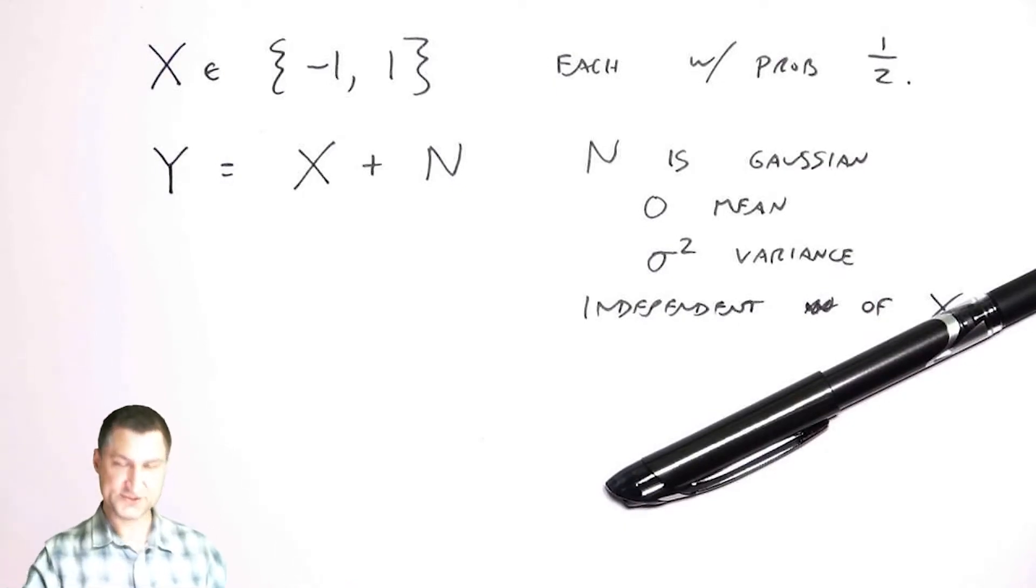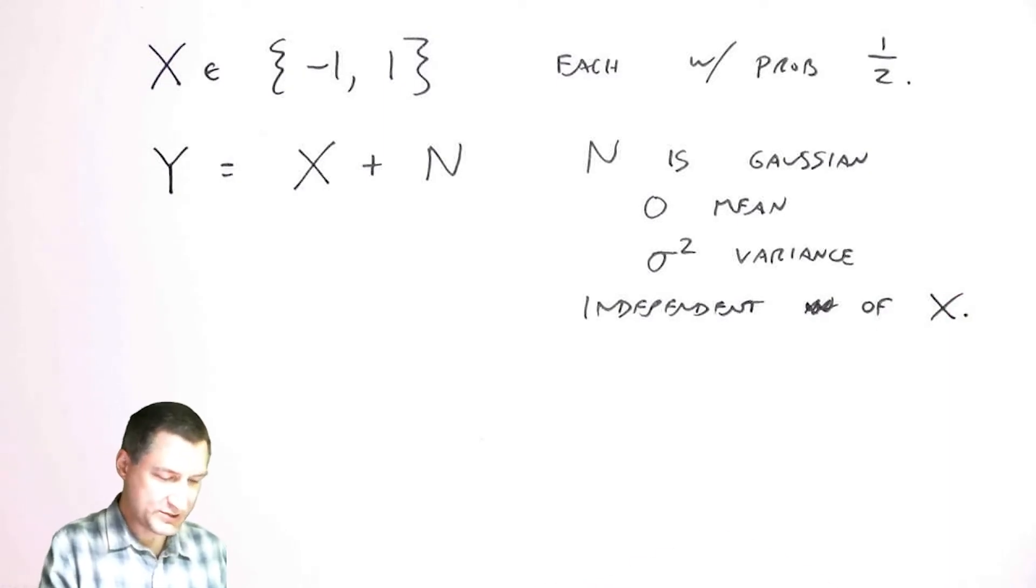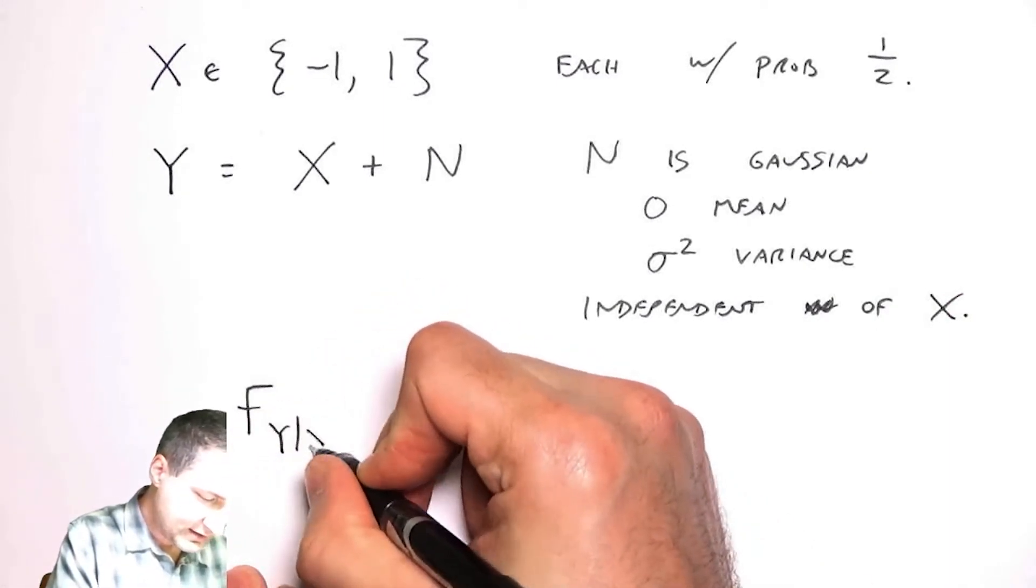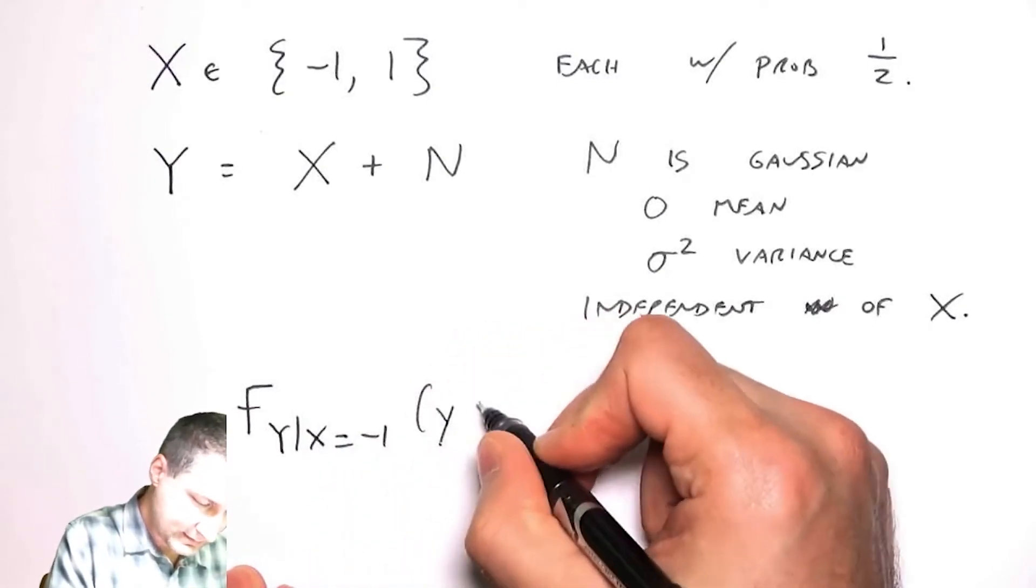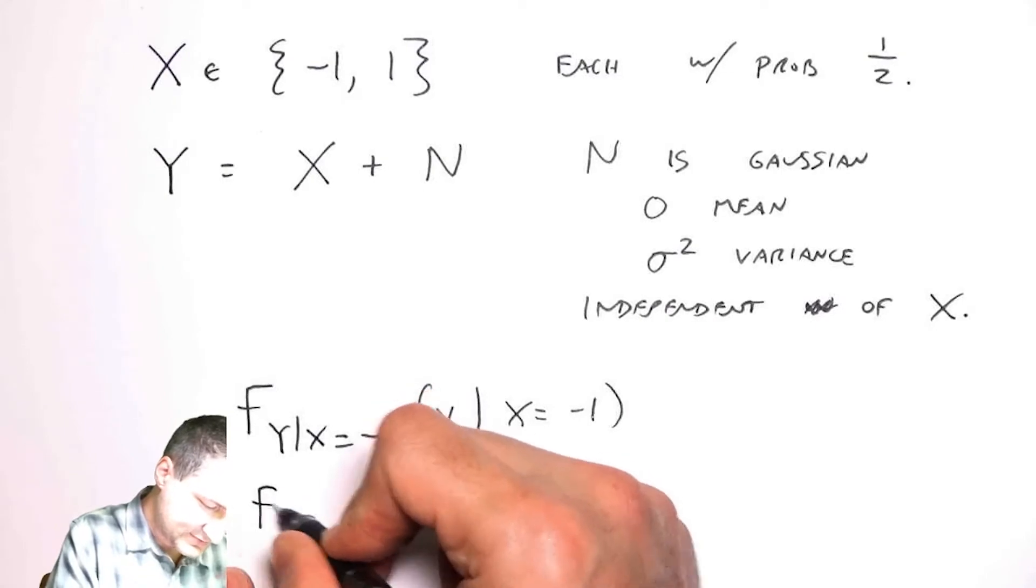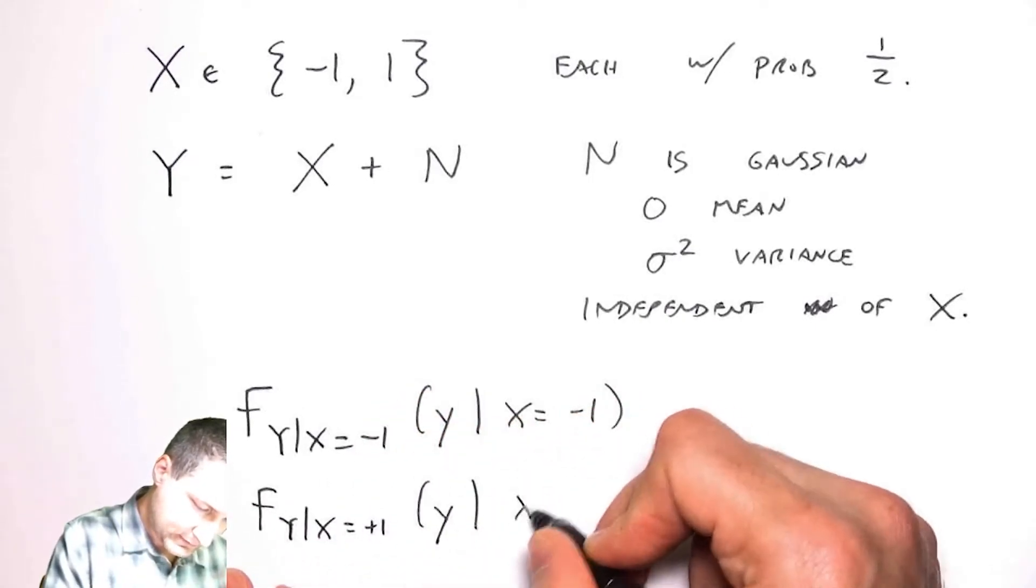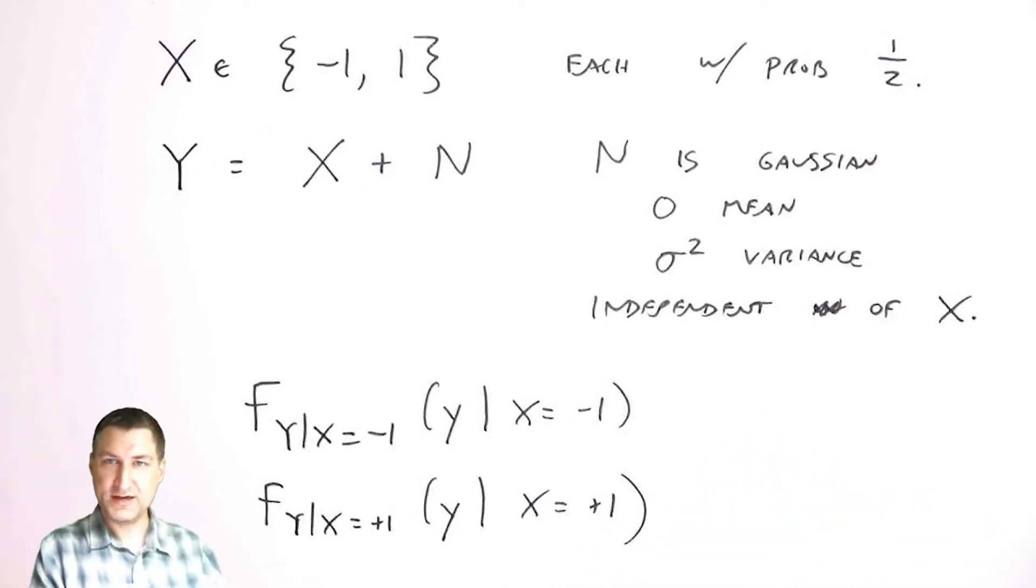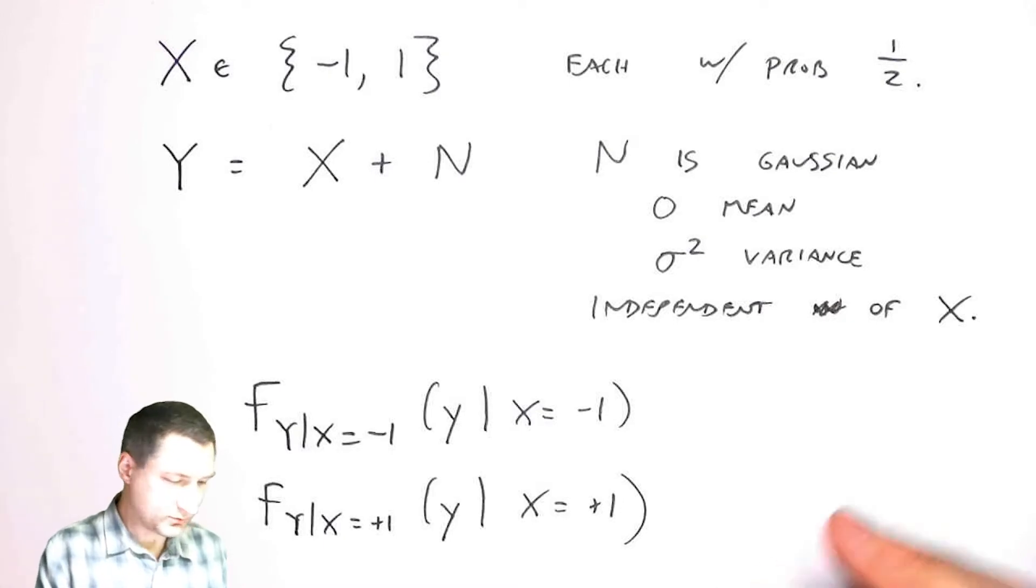So now what I want to do is find the class conditional probabilities assuming that x is minus one. Each of these is going to be a continuous PDF over the possible values of y, and of course it's going to be different depending on what I send through the channel. If I send minus one through the channel then I may get minus 0.78 as the result of y, which is probably more likely for the minus one case than the plus one case. This is to lead us into starting to solve estimation problems where I'm basically trying to decide what was the most likely version of my input.